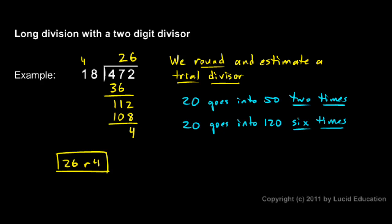That's my answer. And I can check this. I should be able to multiply 26 times 18. And when you do that, 26 times 18 comes out to 468. And then if I add my remainder, 468 plus 4 comes out to 472. And that's my original number. So our answer is correct. 26 remainder 4.